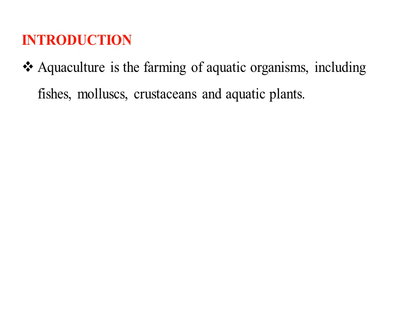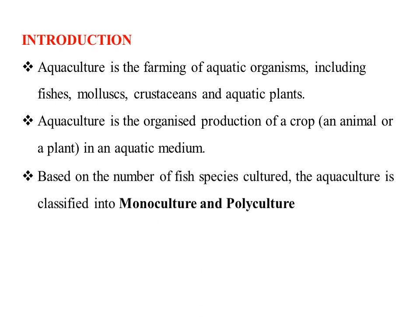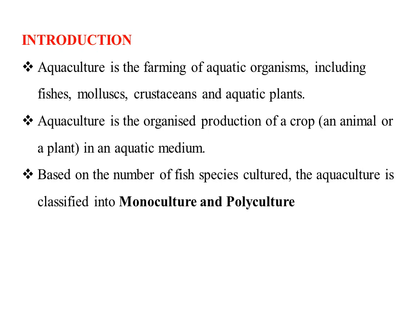Aquaculture encompasses the planning, development, and operational practices of the aquaculture system, including sites, facilities, practices, and production and transport systems. It is the organized production of crop — either an animal or a plant — in an aquatic medium. Based on the number of species to be cultured, aquaculture is classified into monoculture and polyculture.